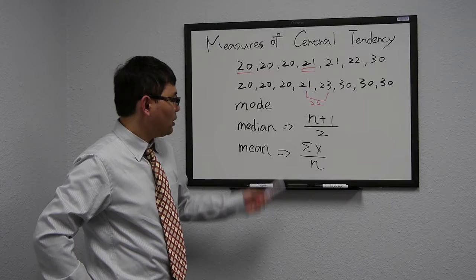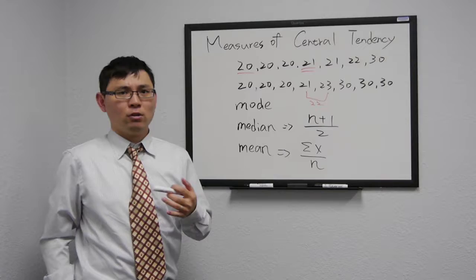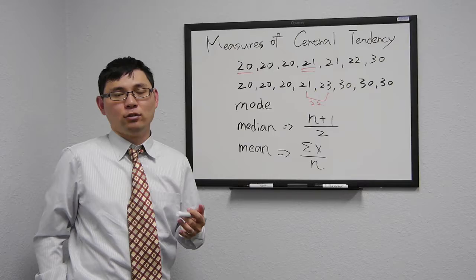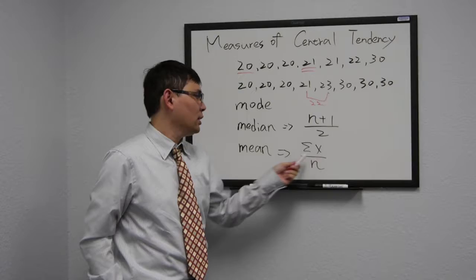The last one is mean. Mean is the center of gravity of a distribution. You should feel familiar with mean, since GPA is also one kind of mean. The formula for mean is mean equals sigma x, the sum of all the numbers, divided by n, the number of cases.